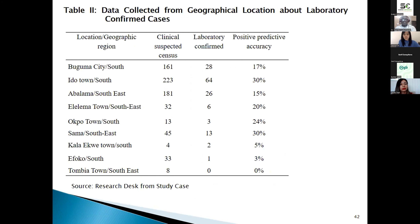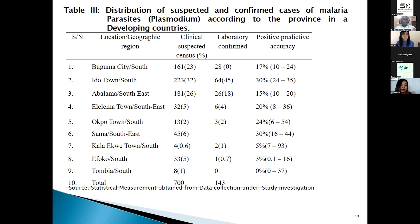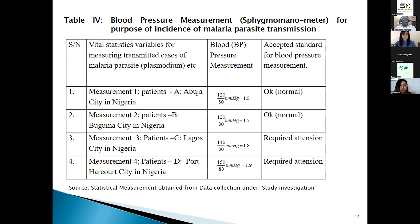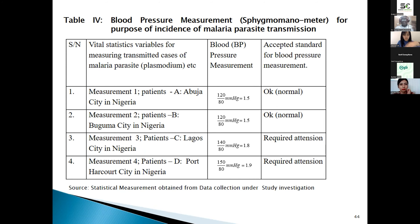These are the study cases for the suspected sensors of the different locations. These are laboratory confirmed cases, and positive predictive accuracy levels being determined for the different locations. Table three also shows the distribution of suspected and confirmed malaria parasite plasmodium cases according to the provisions. For one and two, the reading was 120 over 80 millimeter mercury. For another patient, the discrepancy observed was 140 over 80. We involved these two as the two state variables to be tested — whether what was physically measured agrees with the modified state estimation model before allowing prescriptions or drug administration.